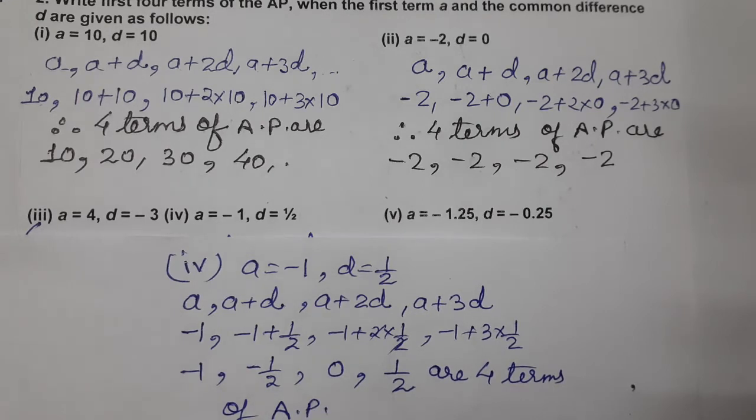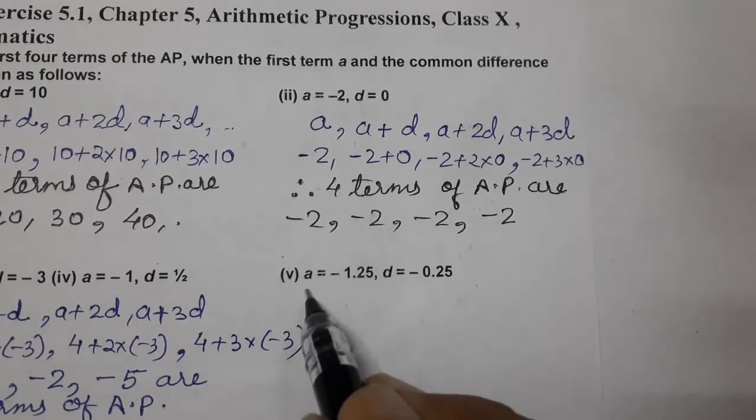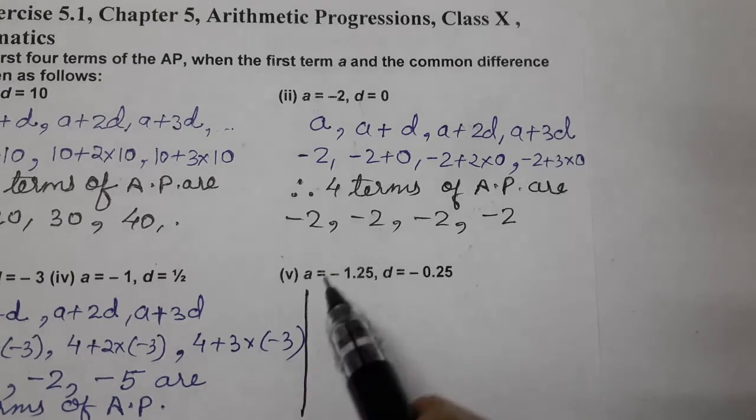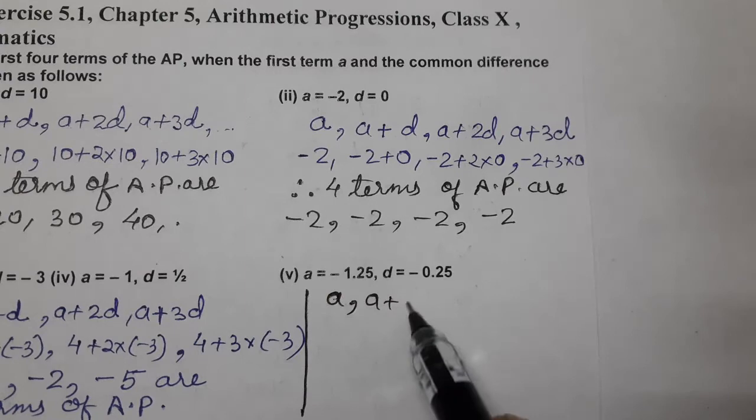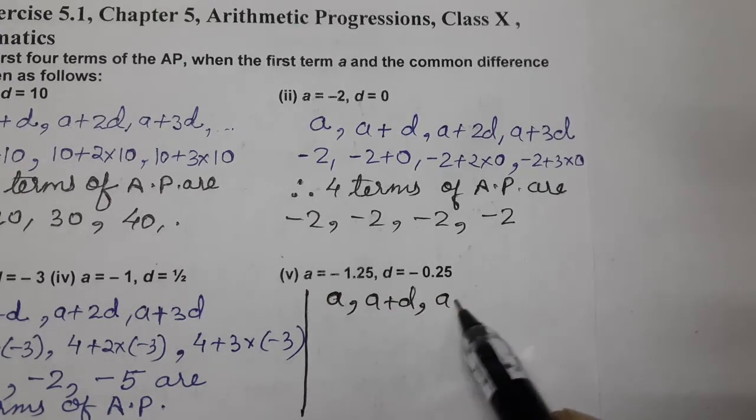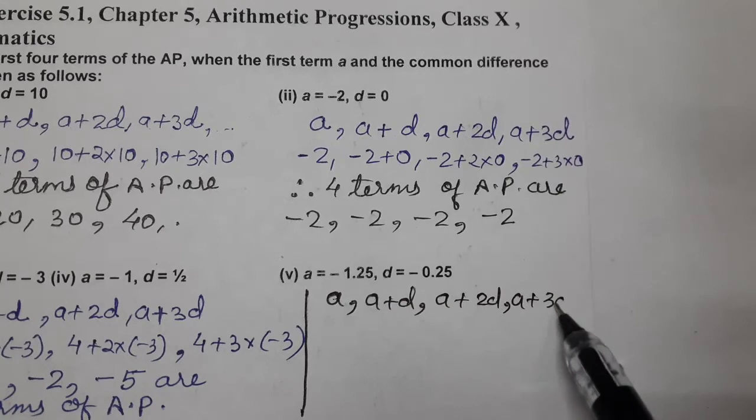Now, we will do the fifth one. So, this completes question number fourth part. Now, we will do the fifth part. Now, see fifth one. So, again we know. Terms are A, A plus D, A plus 2D, and A plus 3D. Put the values.